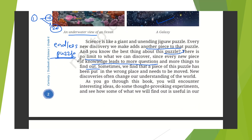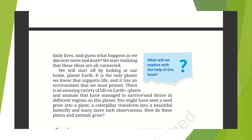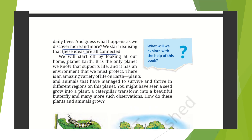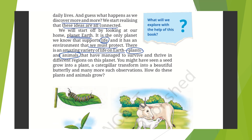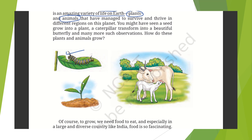As you go through this book, you will encounter interesting ideas, do some thought-provoking experiments, and find out how discoveries are useful in our daily lives. As we discover more and more, we start realizing that these ideas are all connected. We will start off by looking at our home — planet Earth — the only planet that supports life and has an environment we must protect. There is an amazing variety of life on Earth — plants and animals — that have managed to survive and thrive in different regions, like caterpillars and plants.